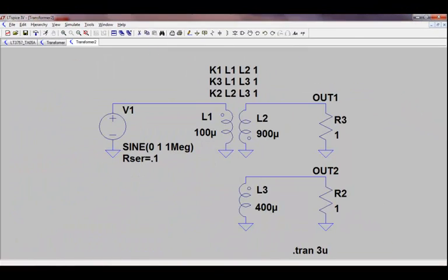When you have a transformer with more than one primary or more than one secondary winding, you have to make sure that all mutual inductances are included in the K statements.